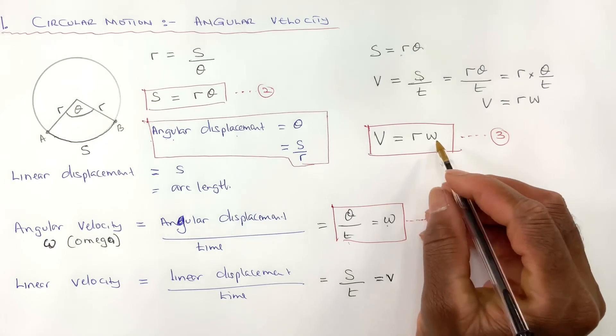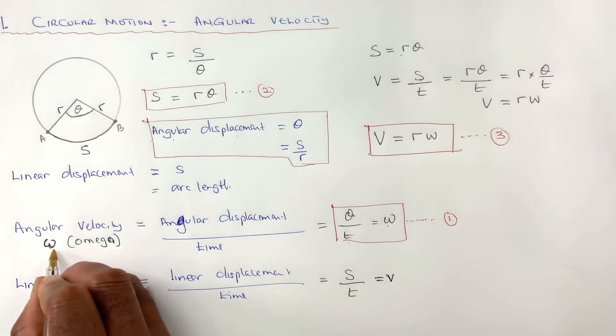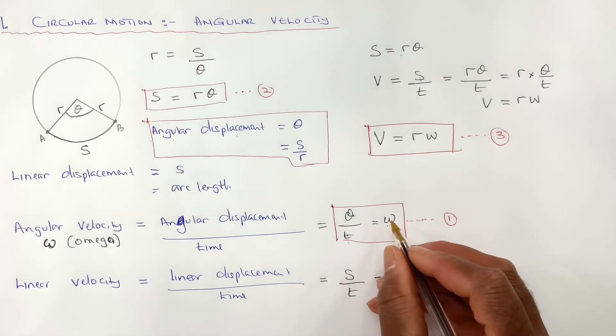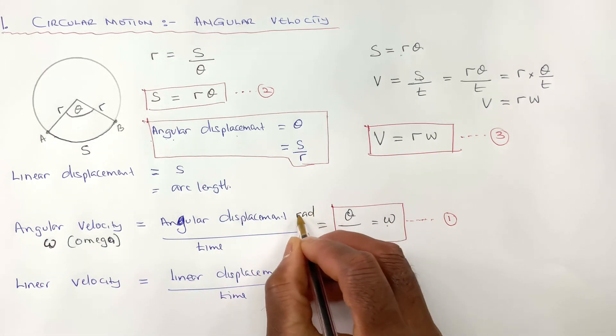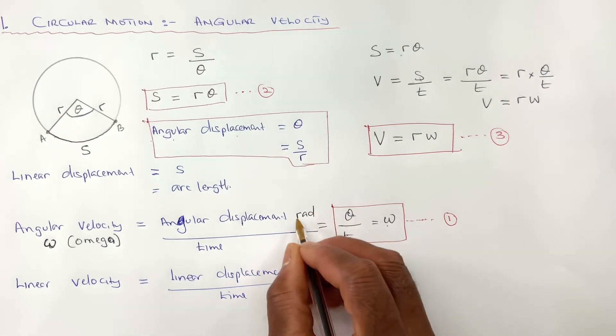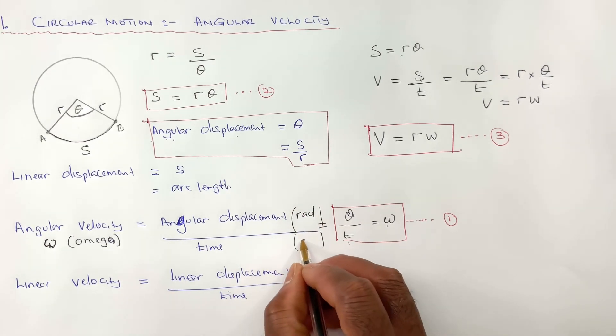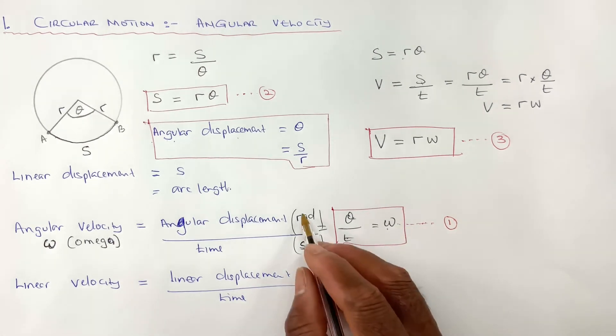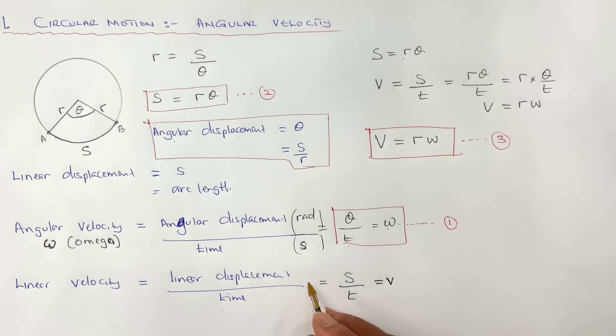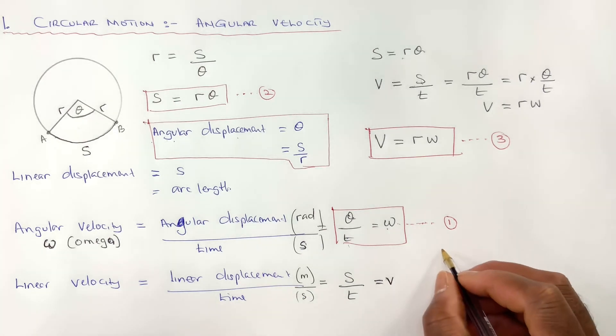Don't forget that the unit for angular velocity is going to be rad because it's in radians over seconds. So that's the unit for angular velocity. Unit for linear velocity would be meters per second. That would just be meters over seconds.